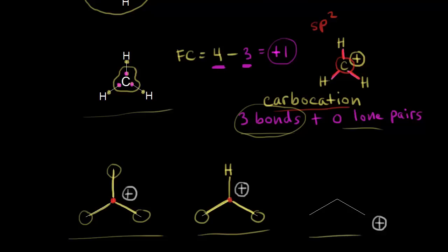In the last carbocation example, the plus one formal charge is on this carbon in red. That carbon in red is directly bonded to one other carbon — that's one bond. We need a total of three bonds, so the carbon in red must have two more bonds to hydrogen. So we draw in one bond to hydrogen and another bond to hydrogen. It's important to recognize these patterns.